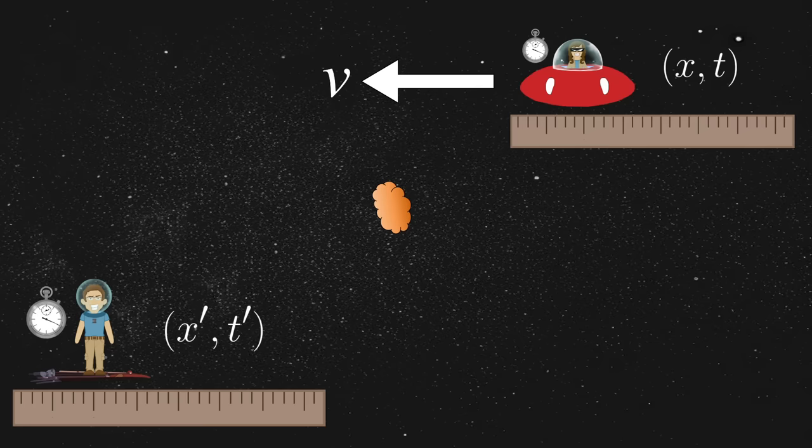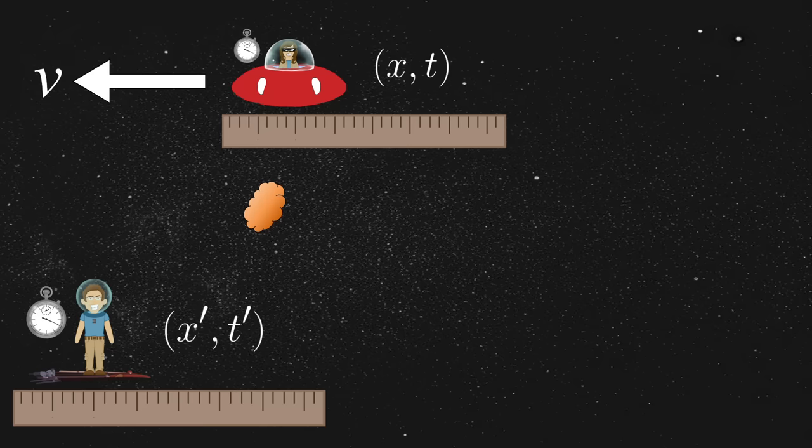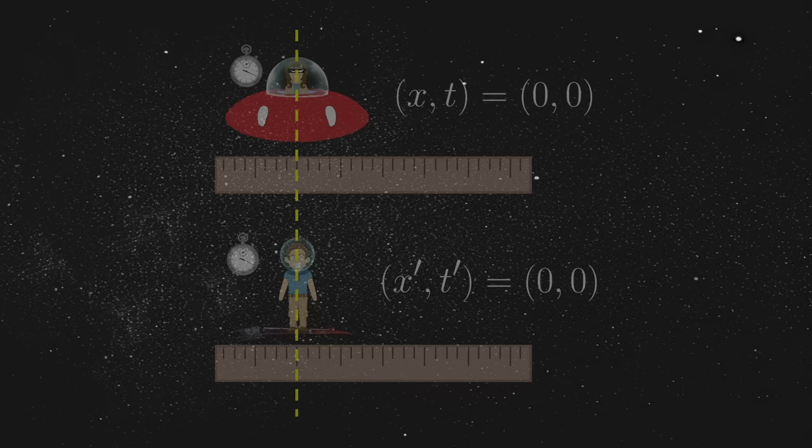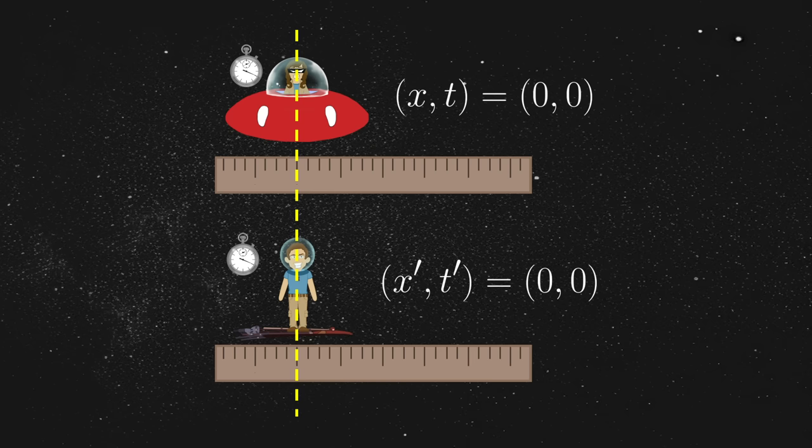Unsurprisingly, Jim therefore measures his events a little bit differently, and we can represent his perspective through the coordinates x' and t'. Finally, for the sake of personal convenience, we may further assume that Jim and Annie both agree to synchronize their instruments at the moment their origins intersect, which means they both agree to label that event as 0, 0.